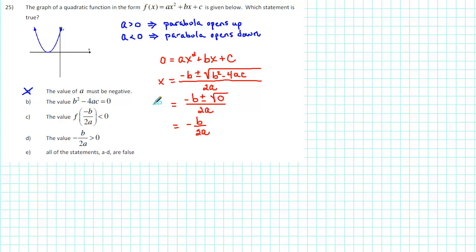That indicates that if the discriminant is equal to 0, then there is just one x-intercept, and that one x-intercept occurs at -b/2a.